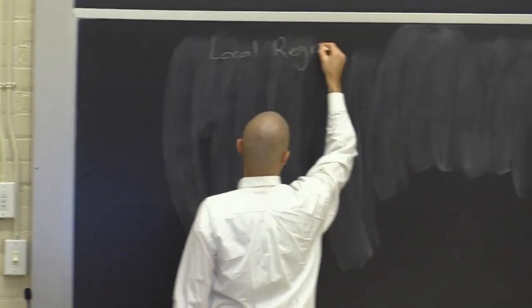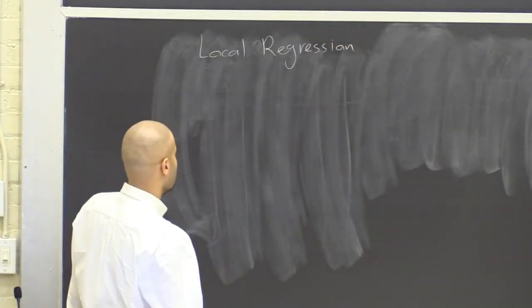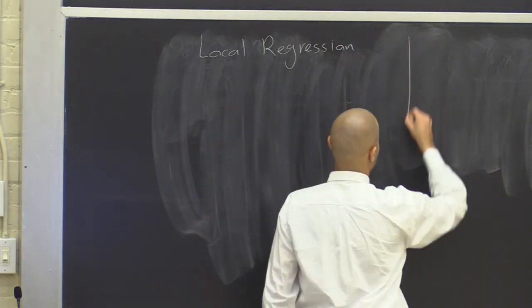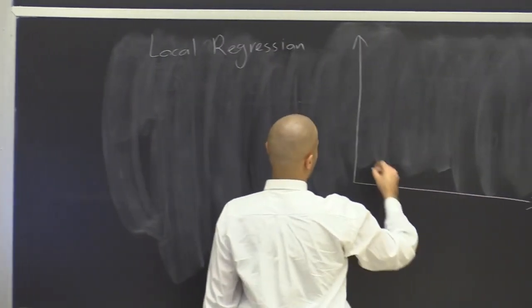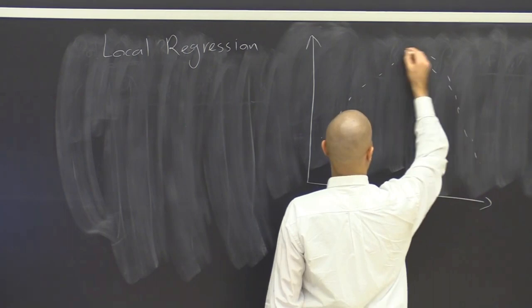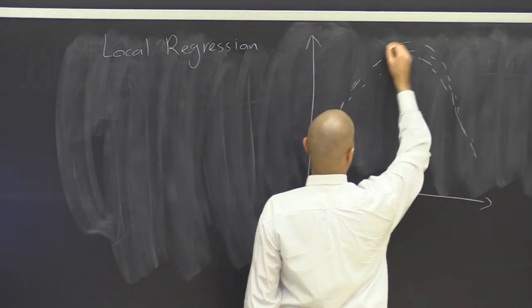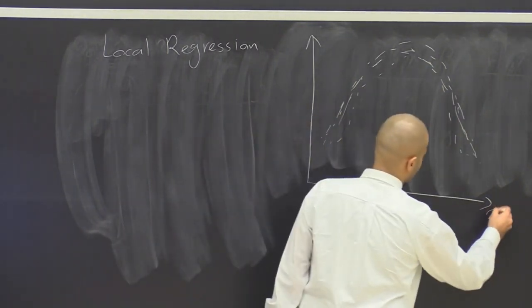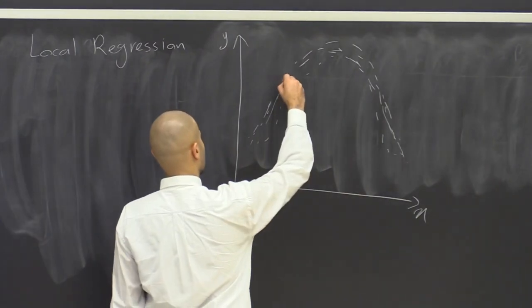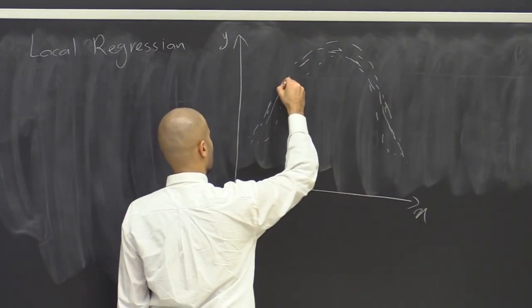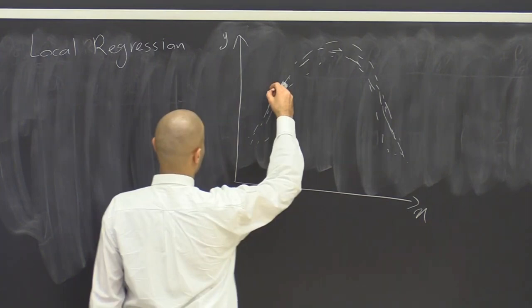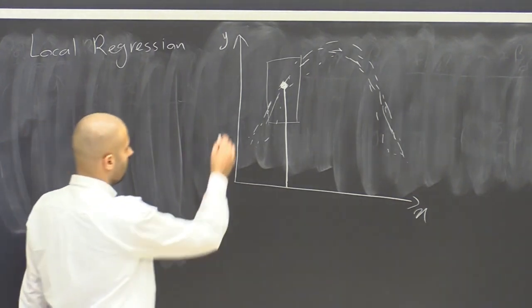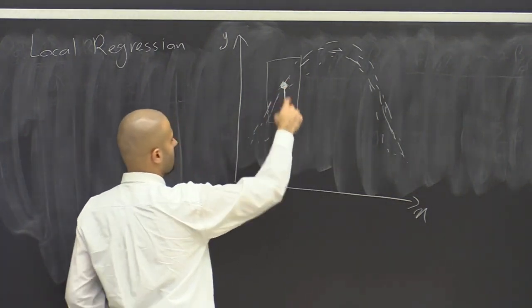We can implement this idea of local estimation in a different way and that gives us local regression. Local regression is based on weighted least squares. Let's say the data that we have looks like this. With local regression, what we're going to do is essentially having some sort of a window and only estimate the function for this window based on the data points that fall within this window.